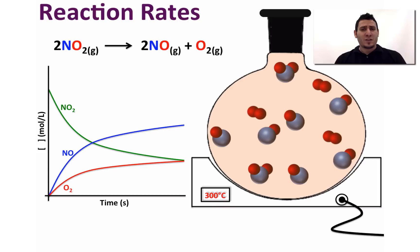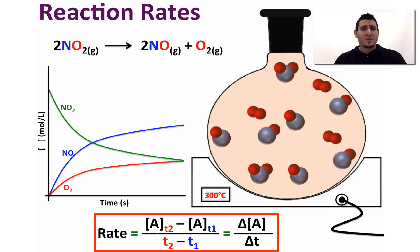With time, the concentration of nitrogen dioxide will decrease and the concentrations of nitrogen monoxide and oxygen will increase. The reaction rate could be determined from the change in the concentration of the reactant or the change in the concentration of a product per unit of time. Therefore, rate is equal to ΔC(A)/Δt, where A could be a product or a reactant.